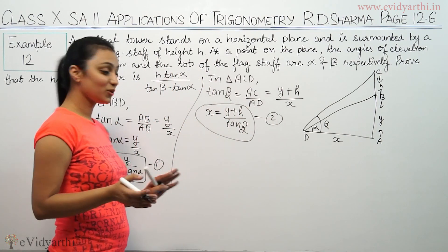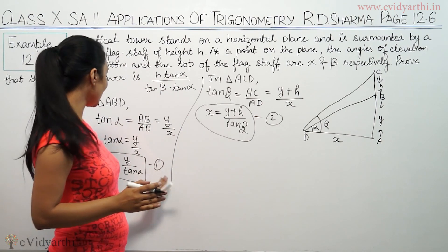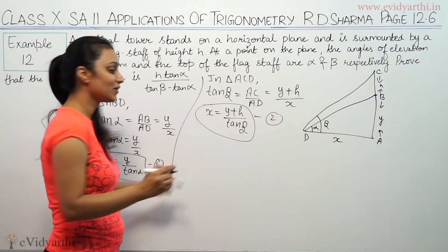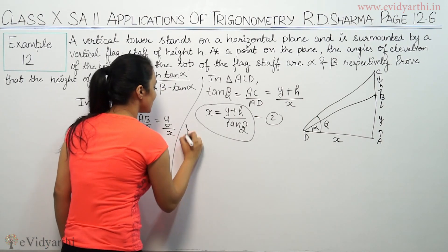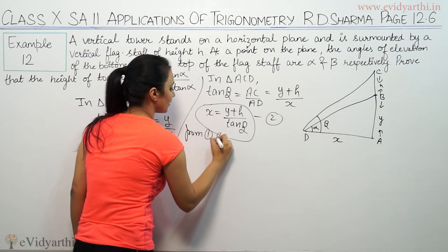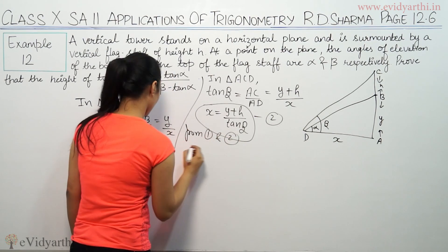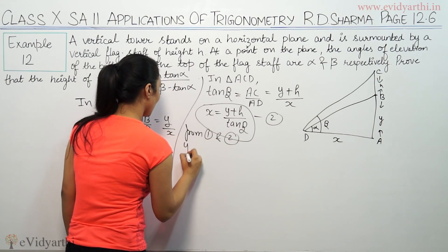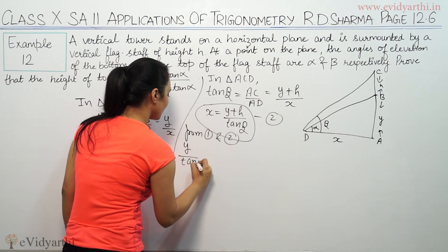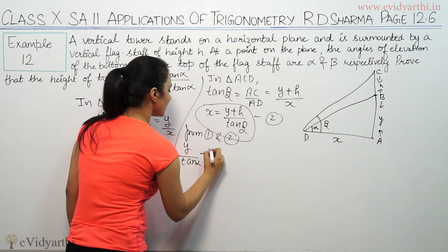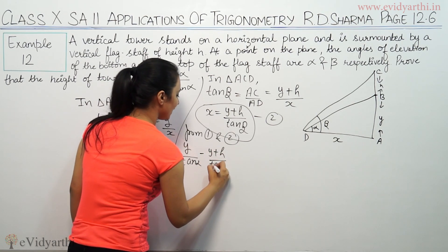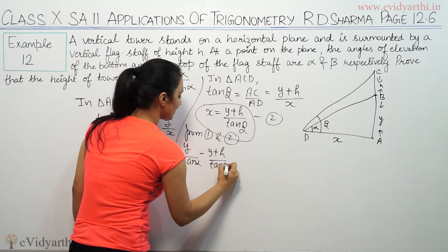Now we will equate these two equations because both expressions equal x. From the first and second equations: y / tan alpha = (y + h) / tan beta.